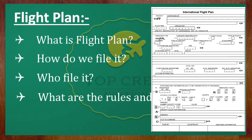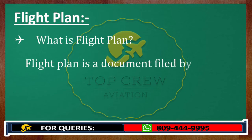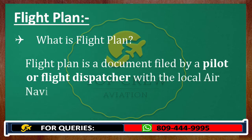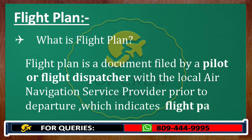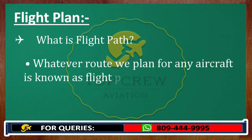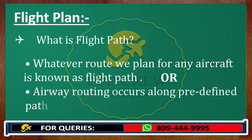Now you must have understood why we need this document. A flight plan is a document filed by a pilot or flight dispatcher with the local air navigation service provider — that can be your local ATC — prior to departure, which indicates the flight path. Whatever route we plan for any aircraft is known as the flight path, or we can say airway routing occurs along predefined pathways called flight path.